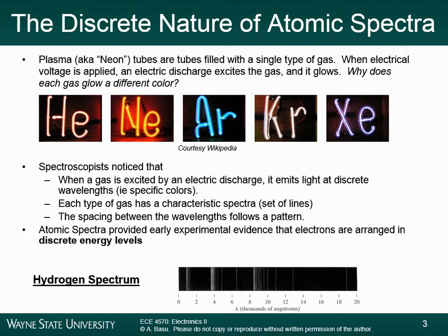Before we get into the details of what electronic configurations are, a little bit about atomic spectra — some of this is for historical reasons, and some of it is just to remind you of what the atomic structure of individual atoms are. We can start by thinking of neon signs, which have been largely replaced by LED signs. Neon signs have glass tubes filled with some type of gas. You have two electrodes, and you put a voltage across the electrodes, which initiates a spark within the glass tube. That spark will be different colors depending on what type of gas you have.